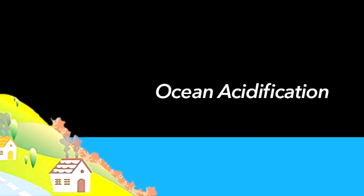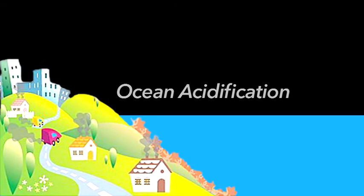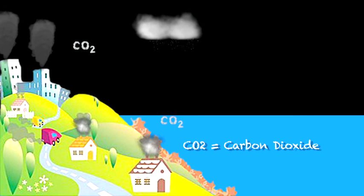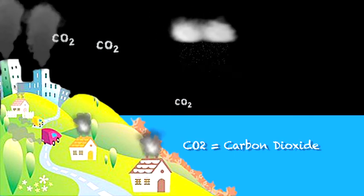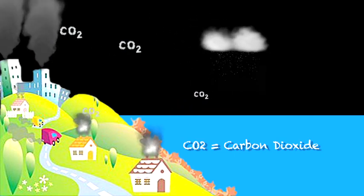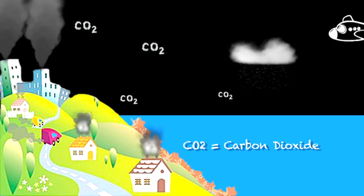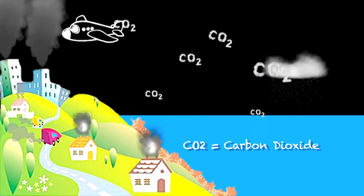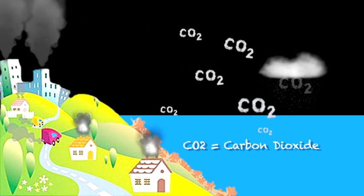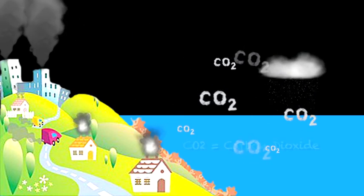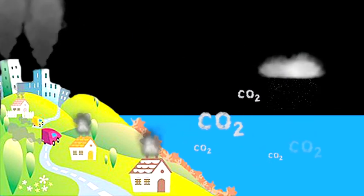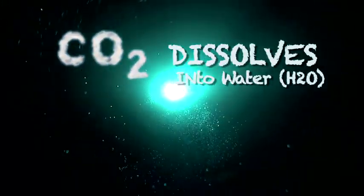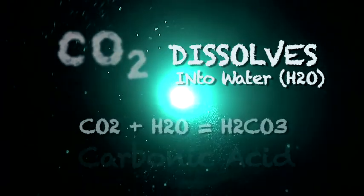Ocean acidification occurs when chemicals like CO2 fall from the atmosphere after being emitted from cars, planes, fossil fuels, and power plants. When they go into the ocean water, they break down molecules and form carbonic acid.